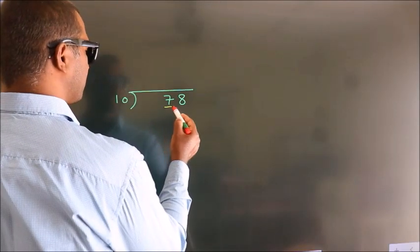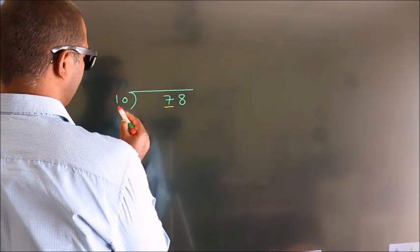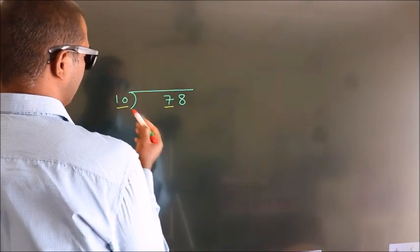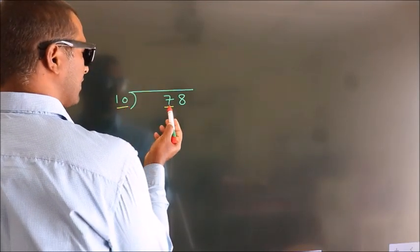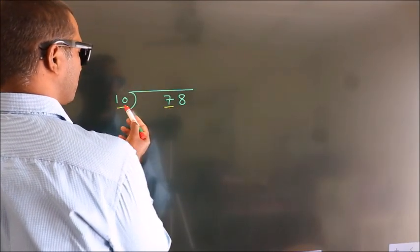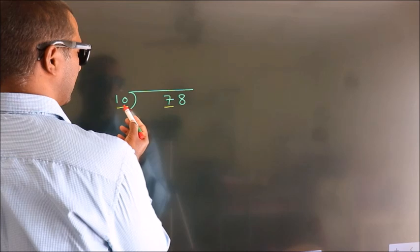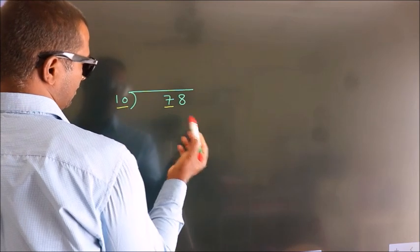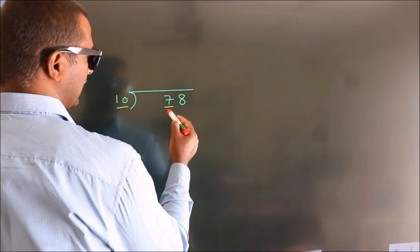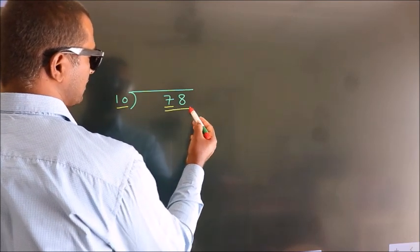Here we have 7, and here 10. Since 7 is smaller than 10, we should take two numbers.